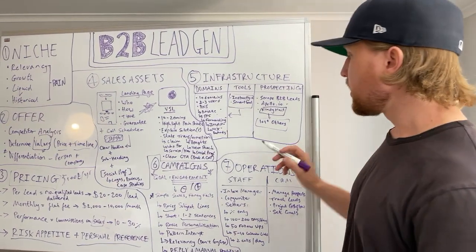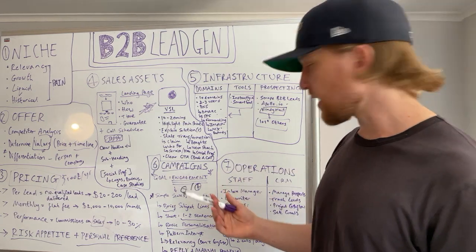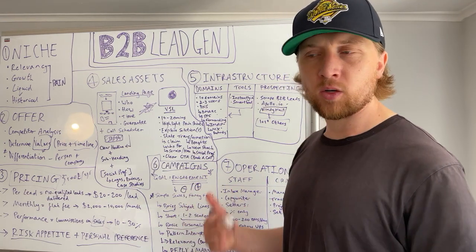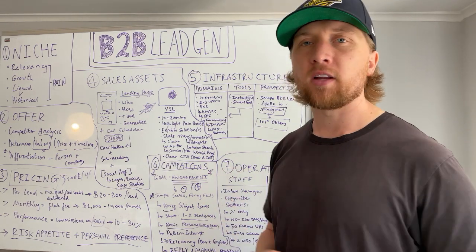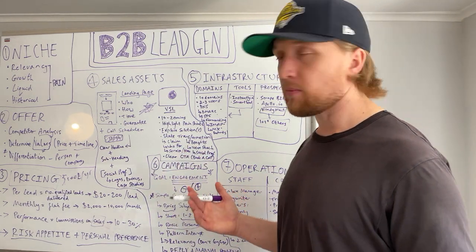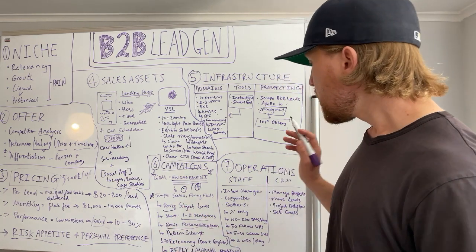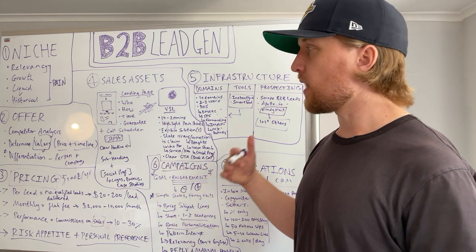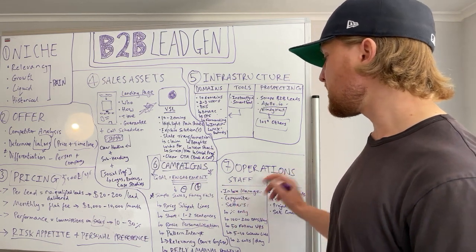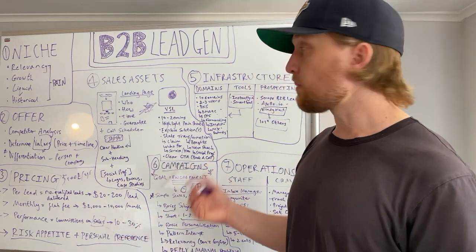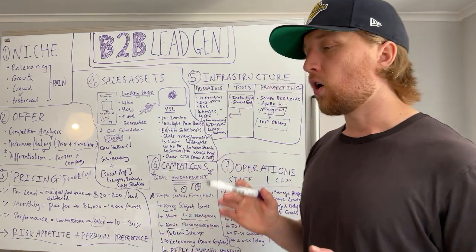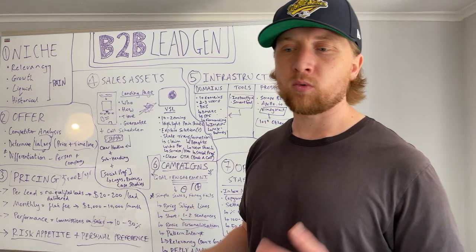Number seven is operations. To scale your lead gen agency, you need operations that free up your time and energy for revenue-generating activities. When managing cold email campaigns — and possibly LinkedIn as well — you want inbox managers: VAs who monitor your inboxes on Instantly or SmartLead and respond immediately to incoming replies.